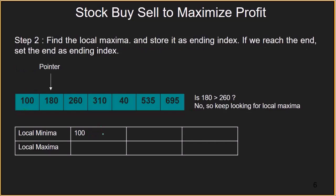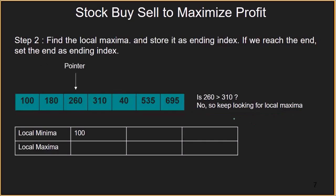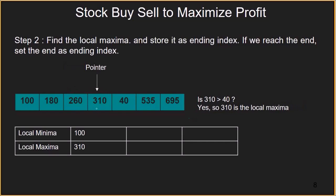Now we proceed to step 2: find the local maxima. We compare 180 with 260 — since 180 is not greater than 260, we keep looking. We then compare 260 with 310 — again not greater, so we continue. Next we compare 310 with 40, and since 310 is greater than 40, we have found the local maxima: 310.